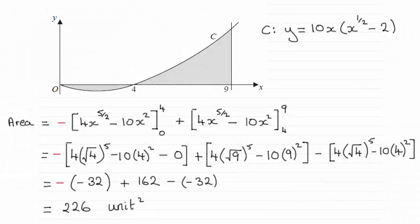Hi there. Now for this question we had to work out this shaded area and we were given the curve with equation C given up here: y equals 10x times x to the half minus 2. And you can see that it turns out to be 226.